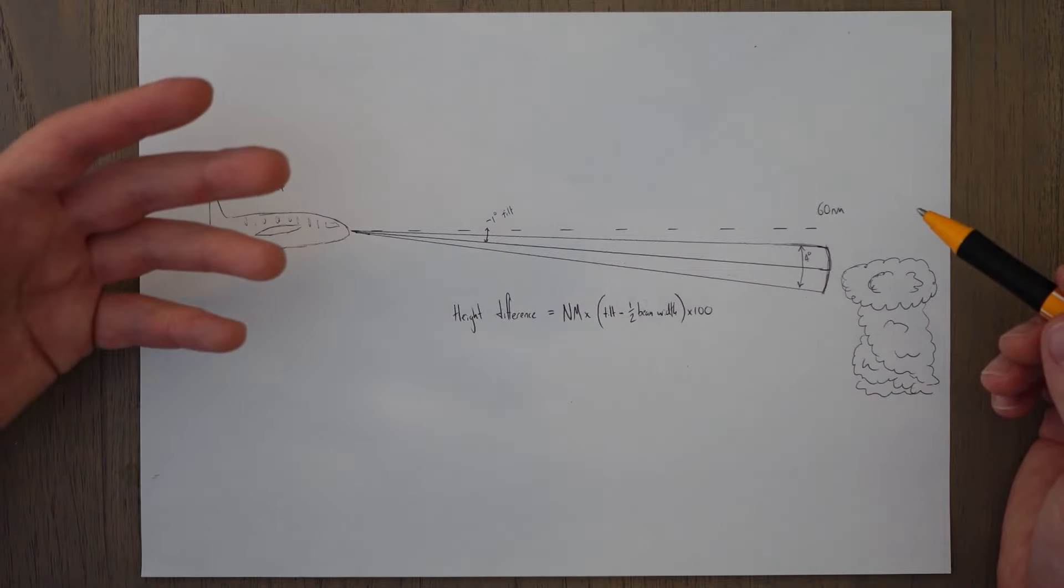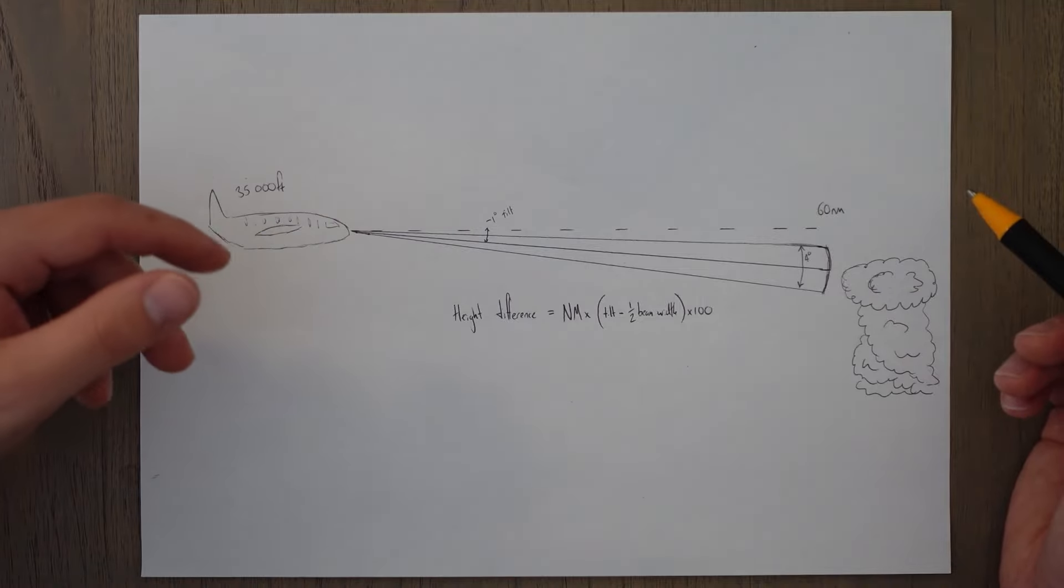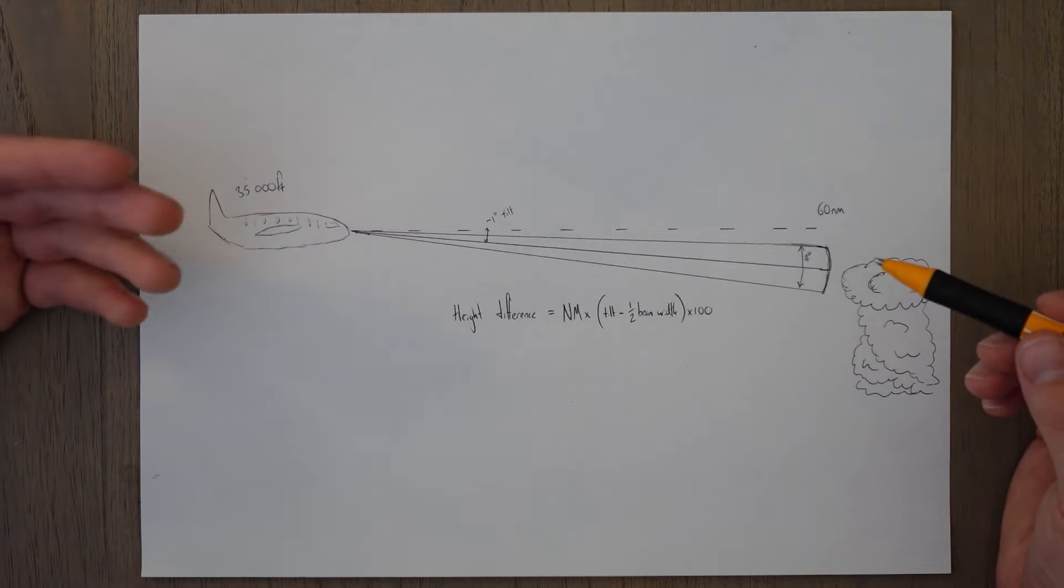If we want to analyze manually we can switch the weather radar into a manual tilt mode and adjust the angle of the beam with respect to the horizon using a little dial. Clever use of the manual tilt can be used to determine the height of cloud tops or areas of high intensity precipitation.